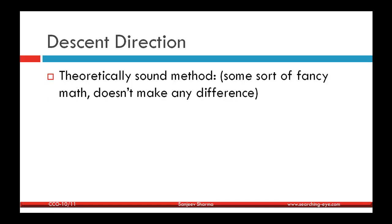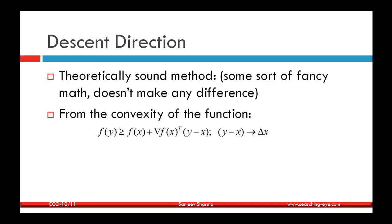The second method derives the descent direction using the definition of convexity. From convexity, we know that f(y) ≥ f(x) + ∇f(x)ᵀ(y - x), where y - x can be taken as Δx. This is the basic definition of convexity — for all x and y in the domain, this inequality holds. Since we assume strong convexity, meaning the Hessian is positive definite, this inequality holds throughout the domain.